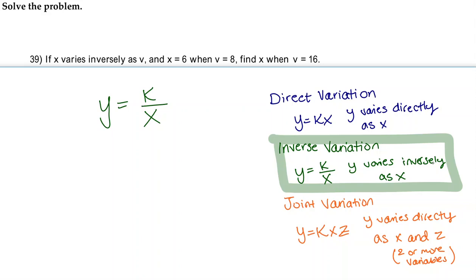So here y varies inversely as x so our y is here and our x is here. Here it reads if x varies inversely as v, so our x is actually going to be our y, our k is still our k, and our v is going to be our x. So we're going to work with the formula x equals k over v.